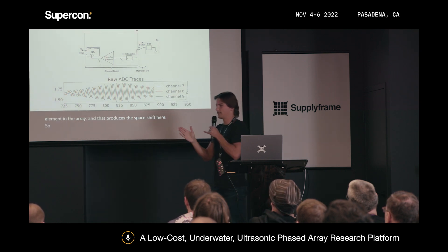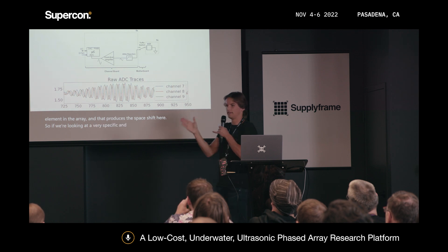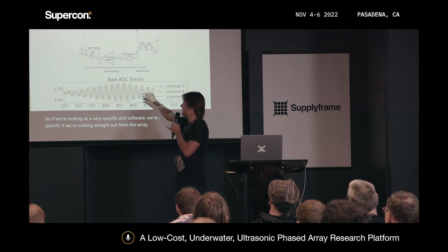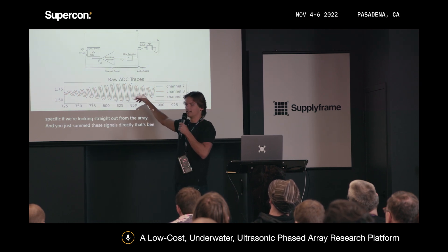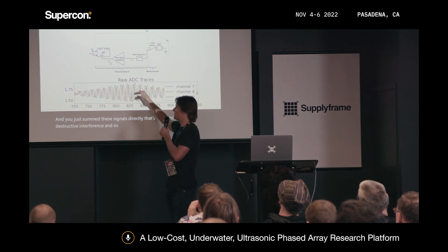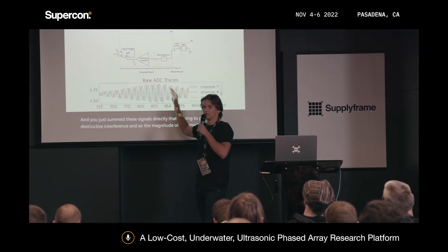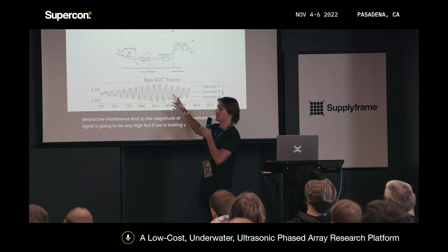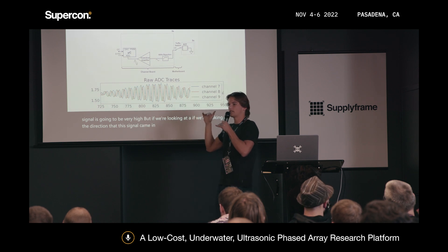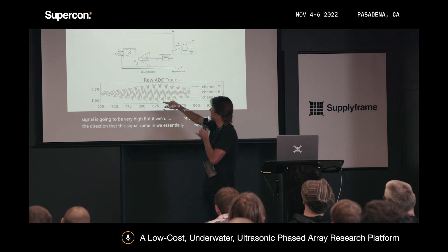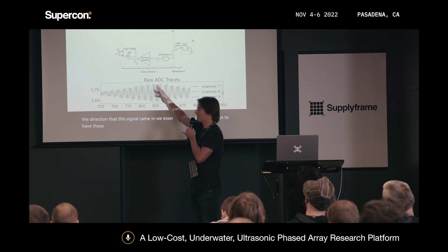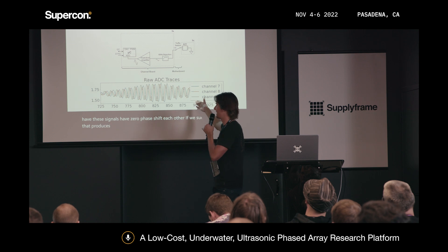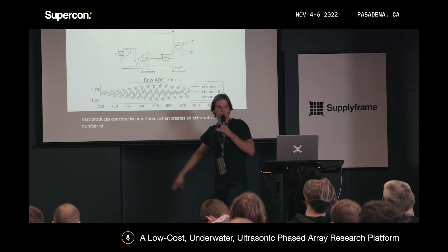If we're looking straight out from the array and simply sum these signals directly, that produces destructive interference and a low envelope magnitude. But if we're looking in the direction the signal actually came from, we reverse the delays so the signals have zero phase shift relative to each other. Summing them then produces constructive interference, creating an echo with a large magnitude. That's how we perform receive beamforming.